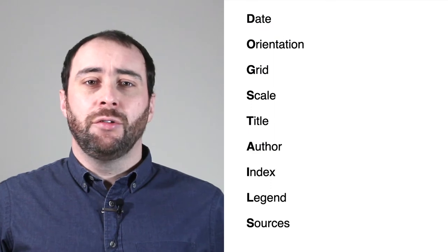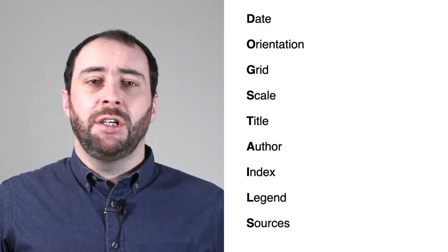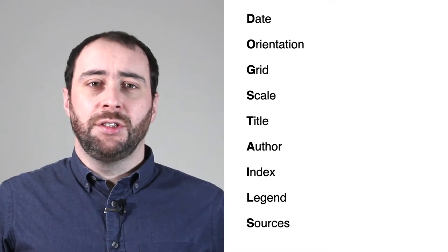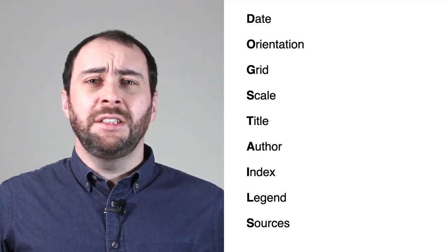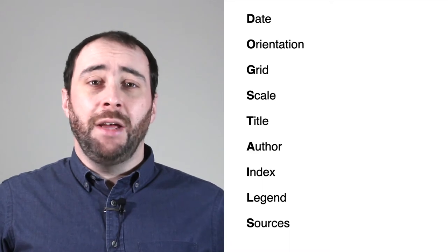We can use an acronym to remember which elements we can consider adding to a map called DOGTAILS: date, orientation, grid, scale, title, author, index, legend, and sources. We don't necessarily have to include all of these elements on every map we make, but we do need to think whether they might be useful. This is one of the design considerations we need to make whenever we're making a map.